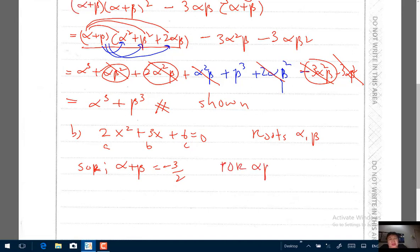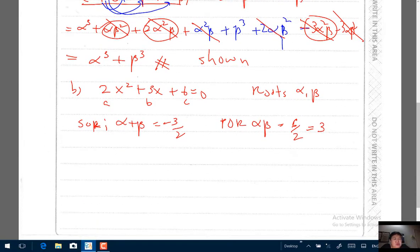So the sum of roots, which is α+β, will be -b, so -3/2. Similarly, product of roots which is αβ is c/a which is 6/2 which is 3.